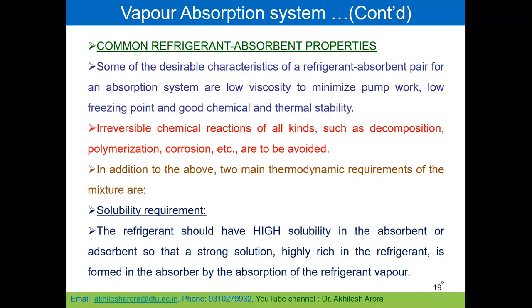Now let us go to the next topic: common refrigerant-absorbent properties. In a vapor absorption system we use a refrigerant and absorbent pair. Two commonly used pairs are ammonia-water and water-lithium bromide. Let us study the important properties that a refrigerant-absorbent pair should have.